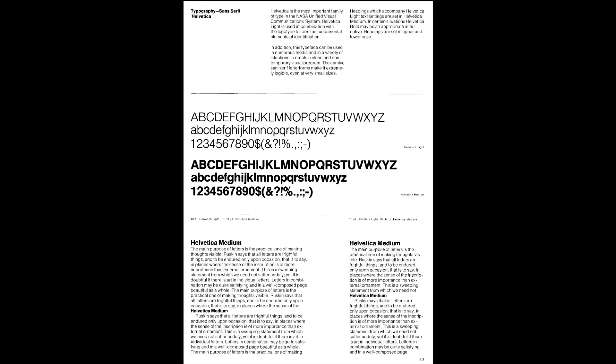Typography — sans serif, Helvetica. Helvetica is the most important family of type in the NASA Unified Visual Communication System. Helvetica Light is used in combination with the logo to form the fundamental elements of identification. This typeface can be used in numerous media and a variety of situations to create a clean and contemporary visual program. The cursive sans serif letter forms make it extremely legible even at very small sizes.